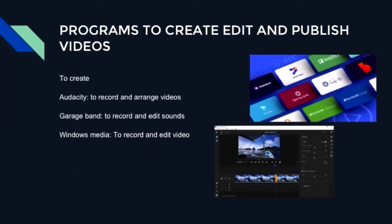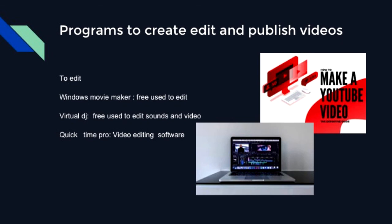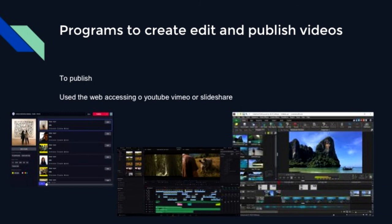Programs to create, edit, and publish videos: To create — Audacity to record and arrange audio; GarageBand to record and edit sounds; Windows Media to record and edit video. To edit — Windows Movie Maker, free to use for editing; Virtual DJ, free to use for editing sounds and video; QuickTime Pro, video editing software. To publish — use web access via YouTube, Vimeo, or SlideShare.